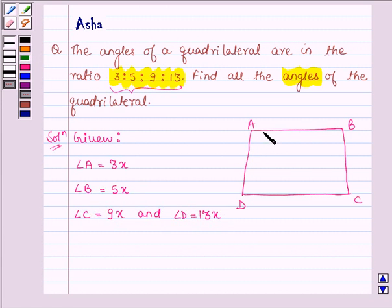So in the figure, angle A is 3x, angle B is 5x, angle C is 9x, and angle D is 13x, where x is a positive real number greater than zero.